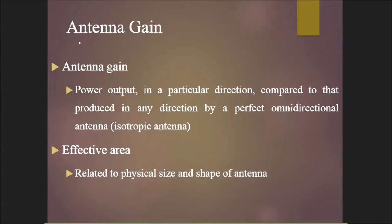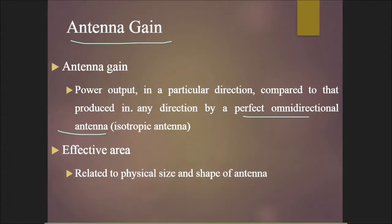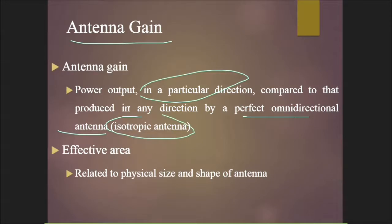Characteristics of an antenna include antenna gain. Antenna gain is the power output in a particular direction compared to that produced in any direction by a perfect omnidirectional (isotropic) antenna. It is essentially a ratio of power output in a particular direction to that of a perfect isotropic antenna. Effective area refers to the physical size and shape of the antenna.